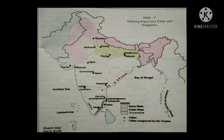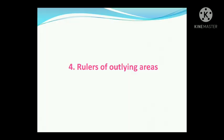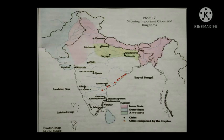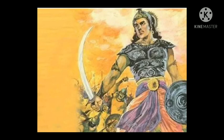The fourth category is the rulers of outlying areas. In this map, you can see the area marked in blue color — that comes under outlying areas. The rulers of outlying areas were descendants of Kushanas, Shakas, and the rulers of Sri Lanka. The rulers in these areas submitted to Samudragupta and also offered daughters in marriage. From all these, we can understand that Samudragupta was a very powerful ruler in the Gupta dynasty.